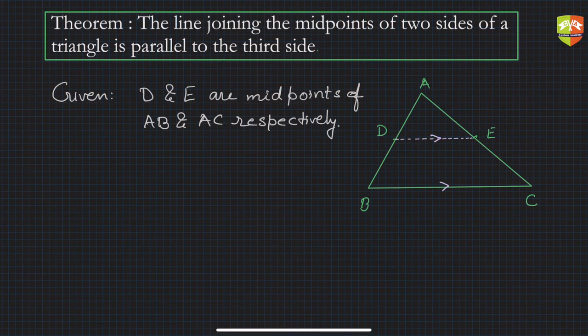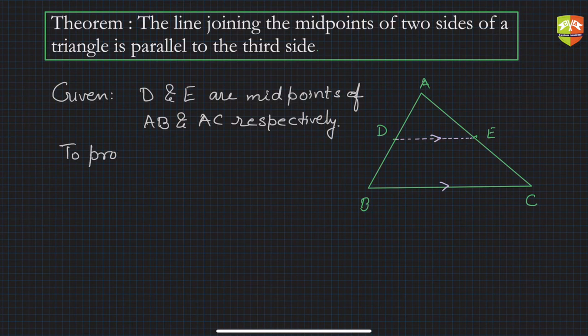What is to be proven? D and E are the midpoints of AB and AC respectively. You have to prove that DE is parallel to BC. So to prove: DE is parallel to BC.